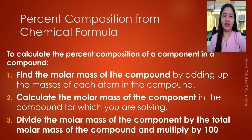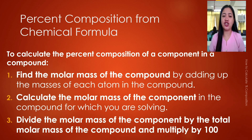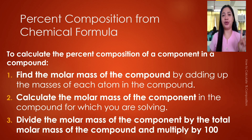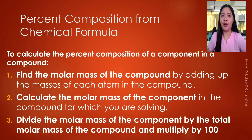For the percent composition from chemical formula, here are the steps. Number one, you have to find the molar mass of the compound by adding up the masses of each atom in the compound. Step number two, calculate the molar mass of the component in the compound for which you are solving. And step number three, you have to divide the molar mass of the component by the total molar mass of the compound and multiply by 100.